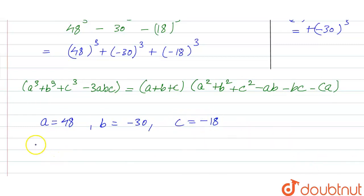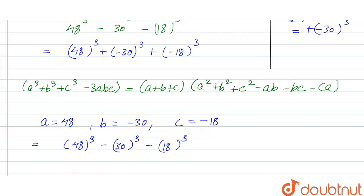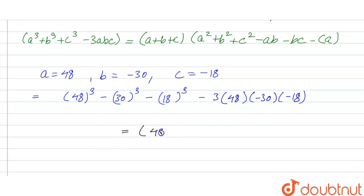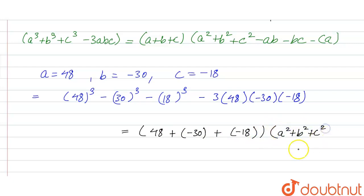The given expression equals 48³ + (−30)³ + (−18)³ − 3×(48)×(−30)×(−18), which equals (a + b + c) = 48 + (−30) + (−18), multiplied by the remaining factor a² + b² + c² − ab − bc − ca.